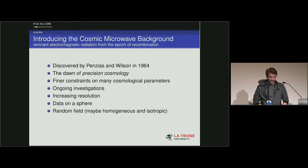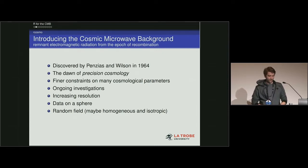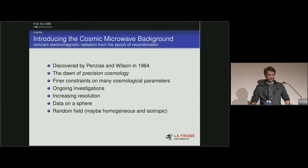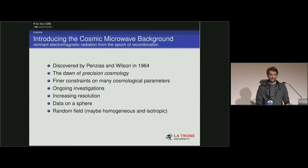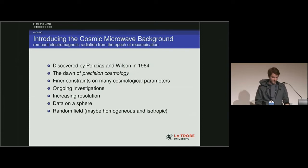There are ongoing investigations into finer-scale anisotropies in the CMB, and we're getting data with exponentially increasing resolution. This data is located on an Earth-centered sphere of radius about 46 billion light years — even though the light is 14 billion years old, space has been expanding during that time.